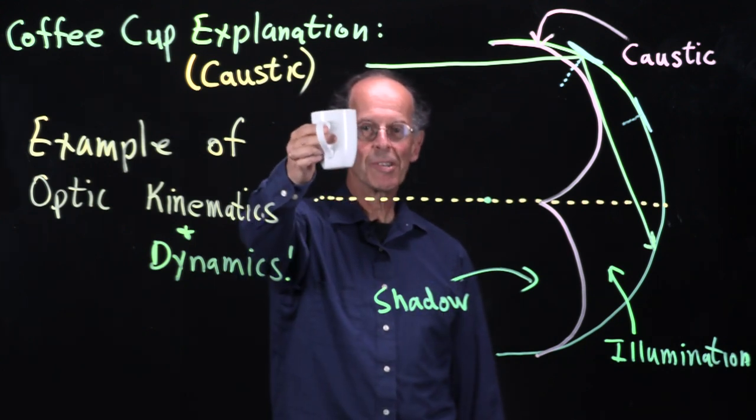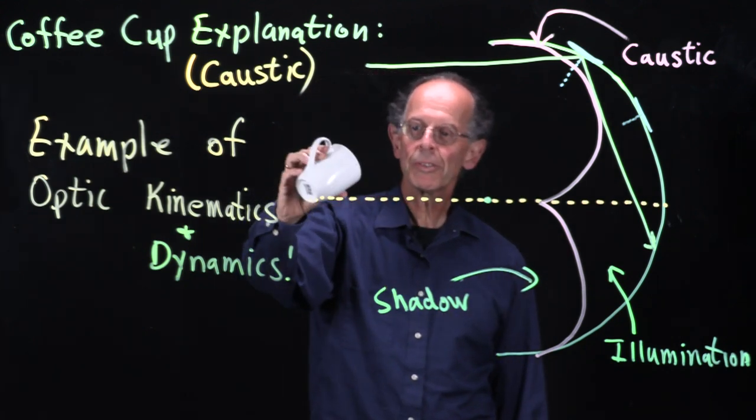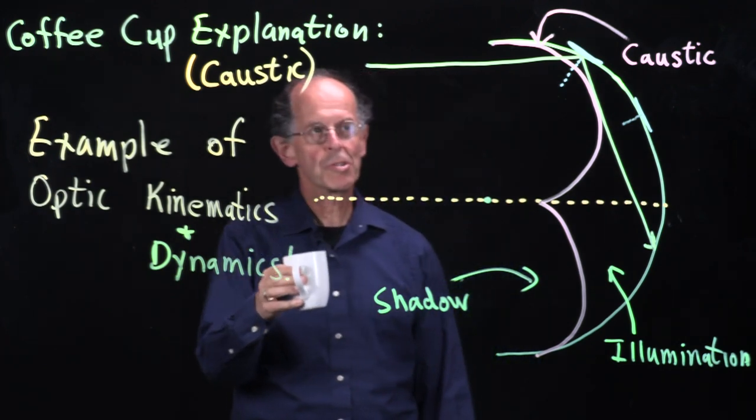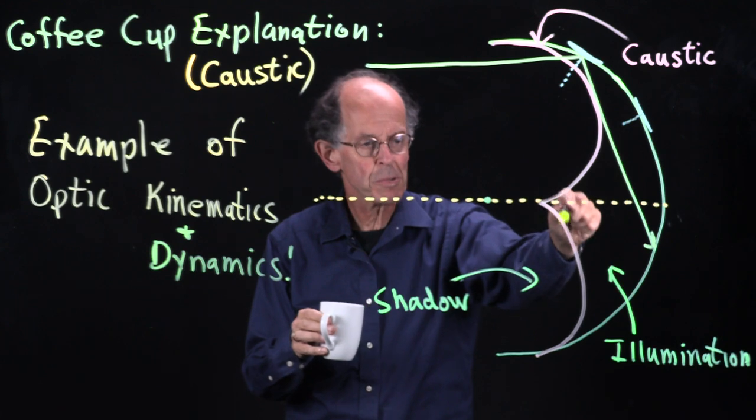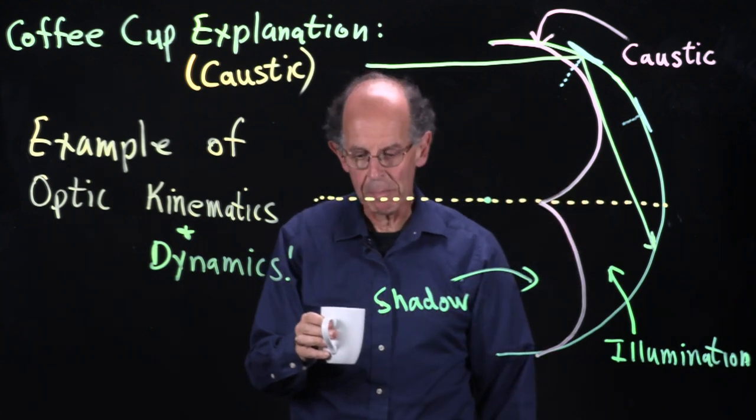Cheers! Here is our coffee cup and we're going to explain how we get, as you saw, the little light pattern which was a backwards three in the bottom of the cup.